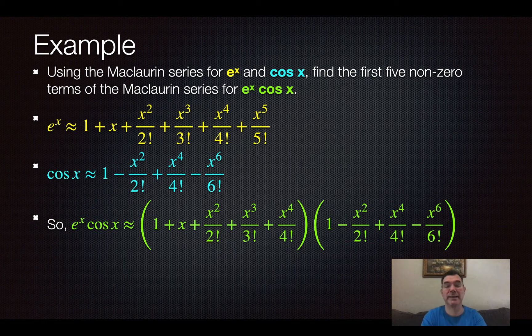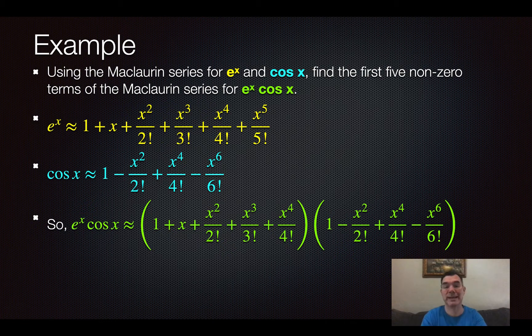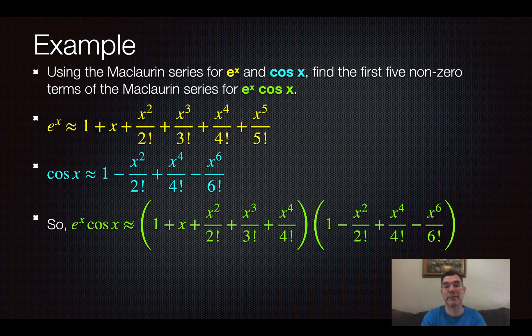So what I need to do to find the Maclaurin series for e to the x times cosine x is basically multiply those together. You'll notice that there are five terms in the first set of parentheses and four terms in the second set of parentheses.